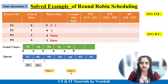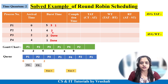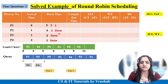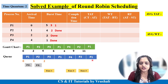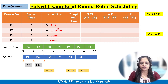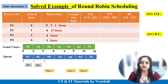CPU executes P2 next, with remaining burst time of 2 units, completing it from 9 to 11. P2 is now done. The only remaining process is P1, with 1 unit remaining. CPU is allocated to P1 and it executes from 11 to 12, completing P1. All processes have now executed as per their burst time.